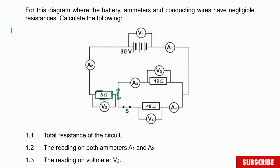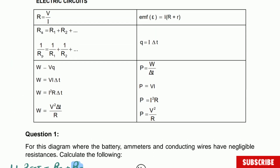Question 1.1: calculate the total resistance. I'm going to write it as external resistance — later when we do internal resistance you'll understand why, but since the battery has no internal resistance, it doesn't matter. The total resistance is the series resistance plus the parallel resistance, so we need to calculate the parallel resistance first. We'll use the general parallel formula.